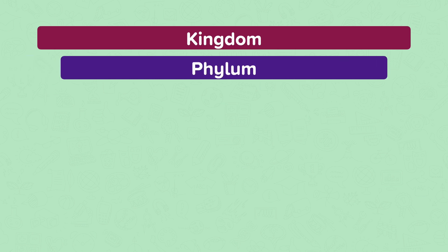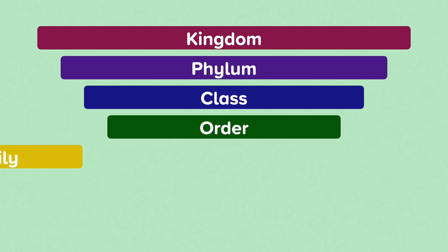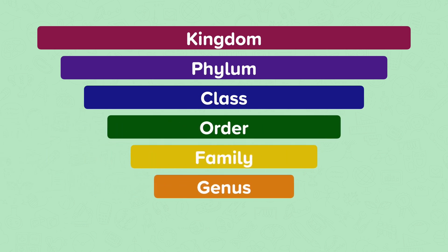Each kingdom is subdivided into phyla, each phyla is subdivided into classes, and so on into smaller and smaller groups of orders, families, genera, and species.